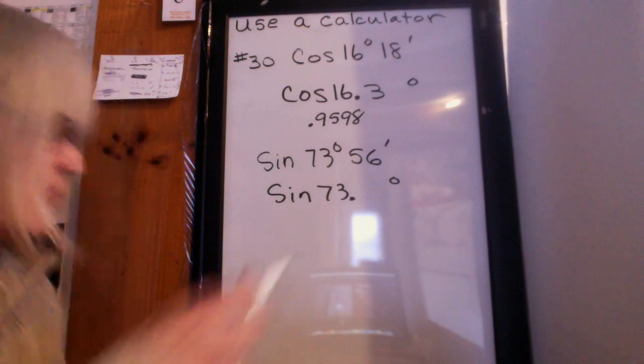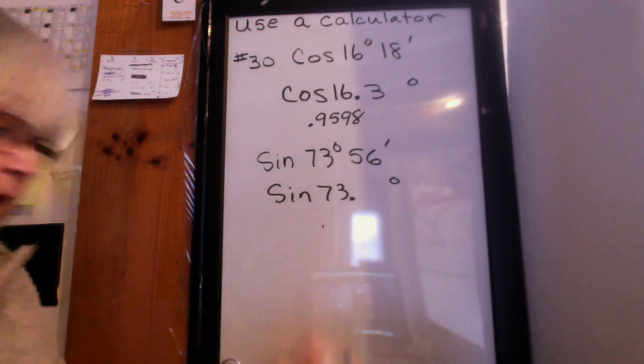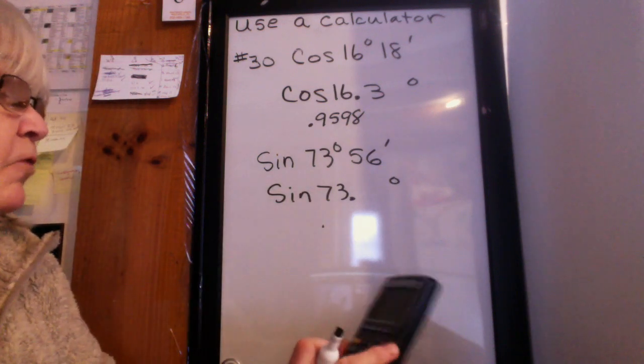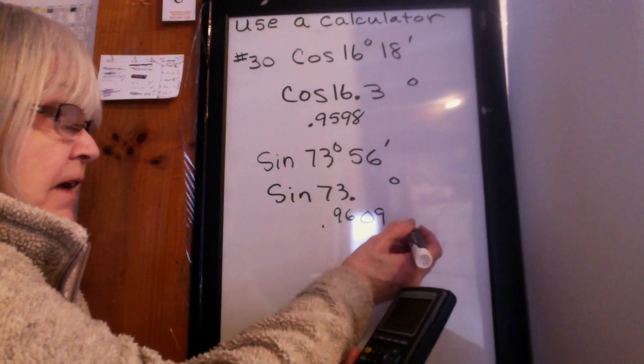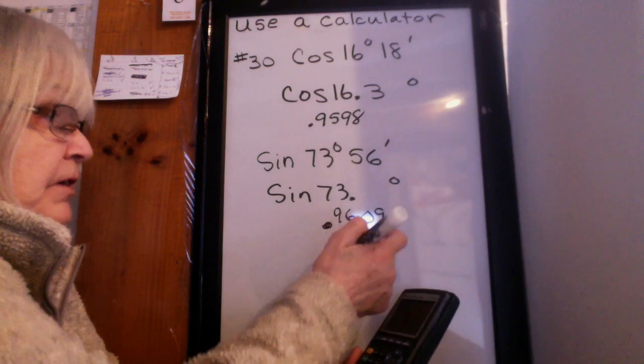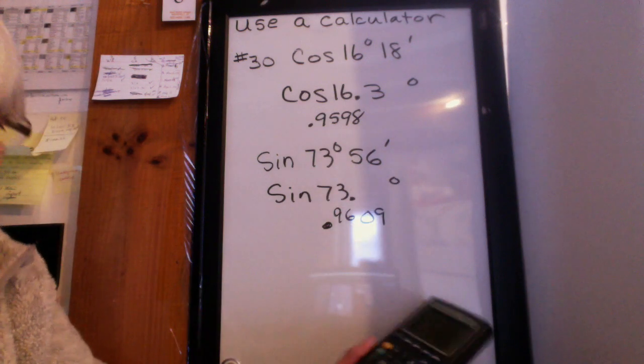And the answer comes out to point, and we want four decimal places. So point nine, six, zero, nine. The next number is four, so I'm not going to change that nine. I'm going to keep it like that.